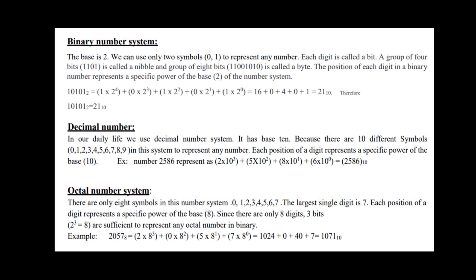Next, decimal number. Decimal number is our daily life number. So 0 to 9 — all numbers are decimal. The base is 10. For example, 2, 5, 8, 6: we calculate 2 into 10 raise to 3, plus 5 into 10 raise to 2, plus 8 into 10 raise to 1, plus 6 into 10 raise to 0. We will check the same answer.